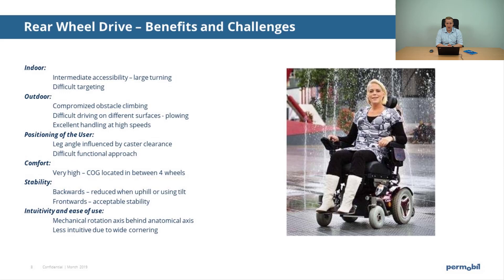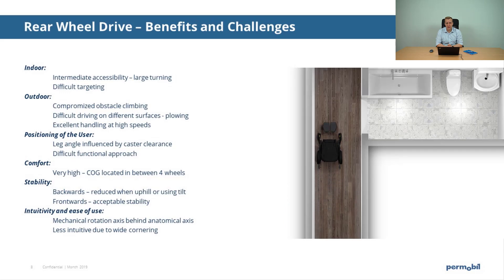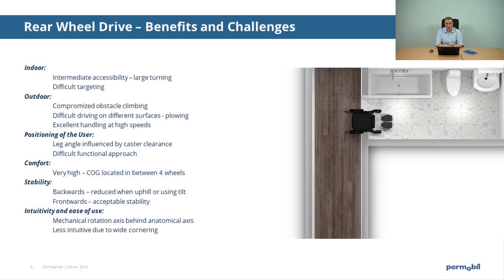At the stability level, the frontward stability of this power wheelchair is perceived as high. The backward stability, however, is reduced. Especially when users are driving uphill or using the tilt function, the wheelchair can show a risk for tipping, and anti-tipper wheels will be necessary to preserve user safety. This platform is also perceived as the least intuitive. The mechanical rotation axis is located behind the anatomical rotation axis of the user, making it less intuitive and requiring better judging skills, especially due to the wide cornering.